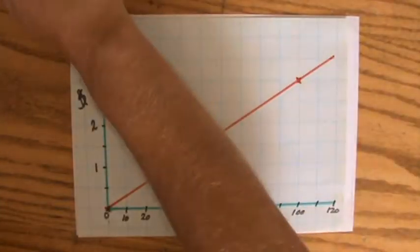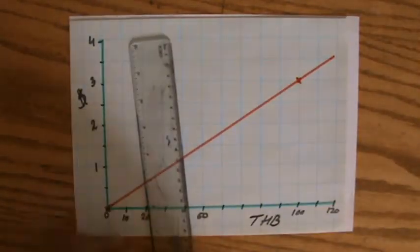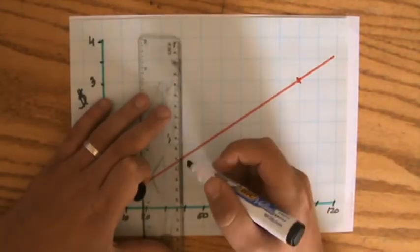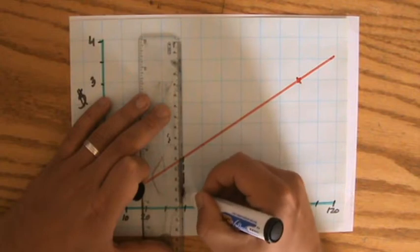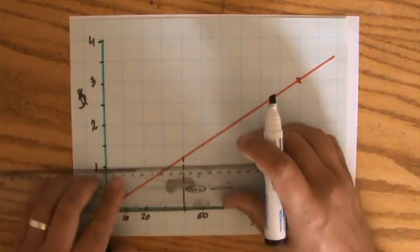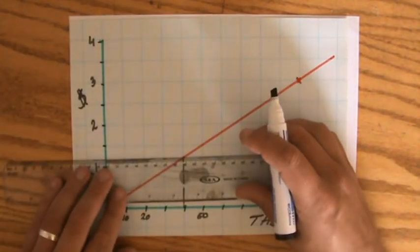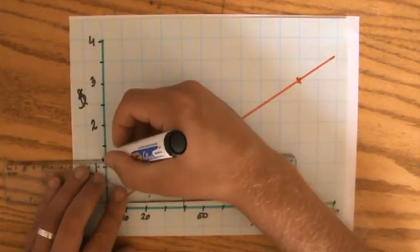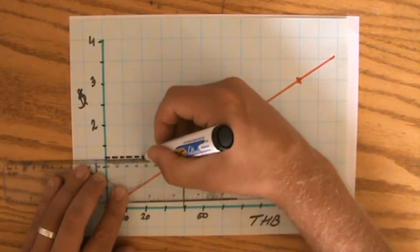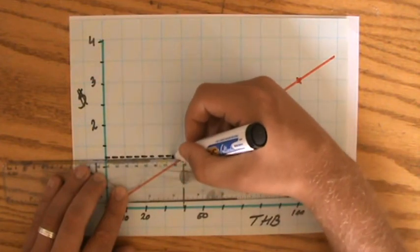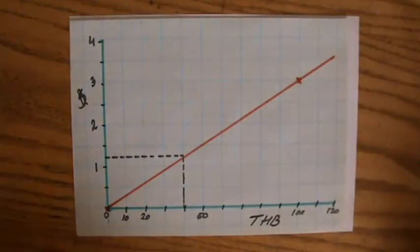40 Baht, let's start there. So I go to 40 Baht, and I go up to my graph, and I go in that direction.